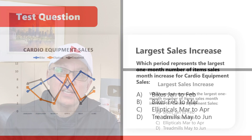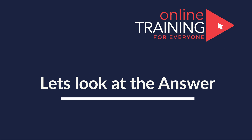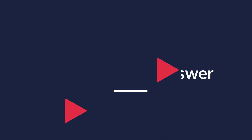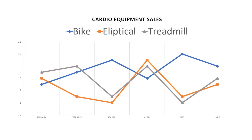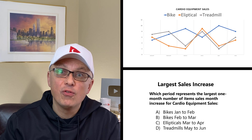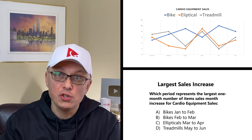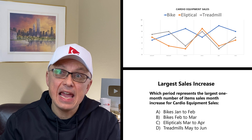Do you see the answer? Give yourself five to ten seconds. We're going to move forward and cover the answer. To solve this, we need to look at the graph closely, determine the actual values at each data point, and look at the differences from month to month for each of the four answer choices.